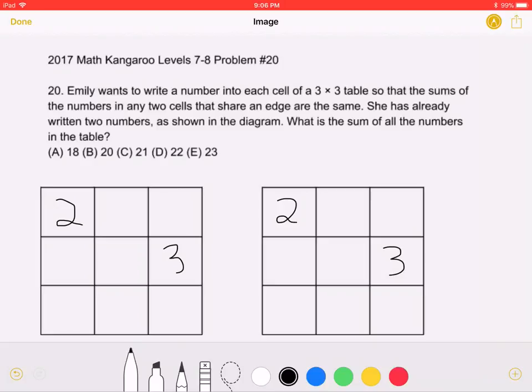The sum of two numbers in any two cells that share an edge are the same. Therefore, if we denote the number in this cell as A and the number in this cell as B, we will get that 2 plus A is equal to A plus B. If we subtract A from both sides, we will see that B is equal to 2.